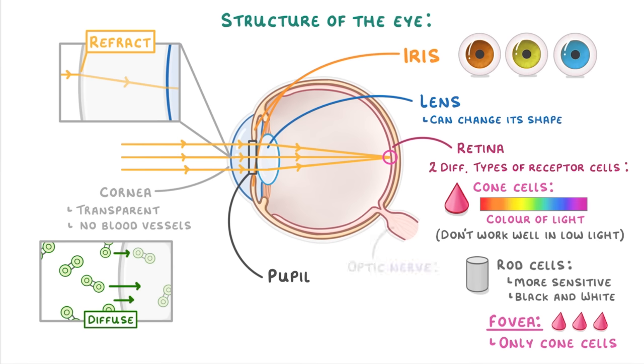And lastly we have the optic nerve, which takes all of the impulses generated by the receptor cells and transmits them to the brain.